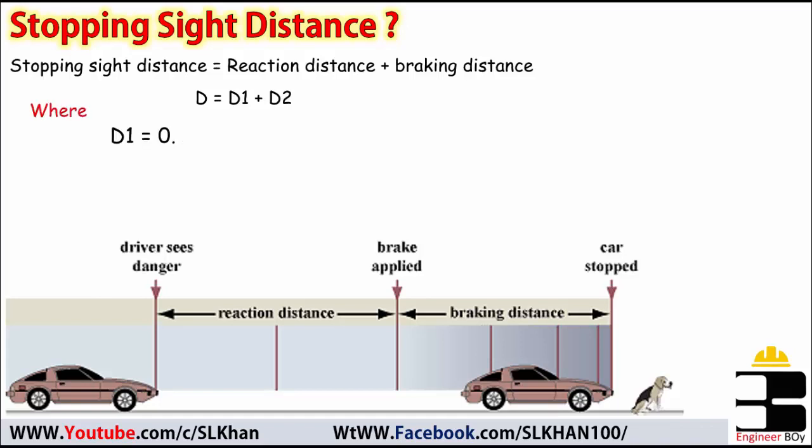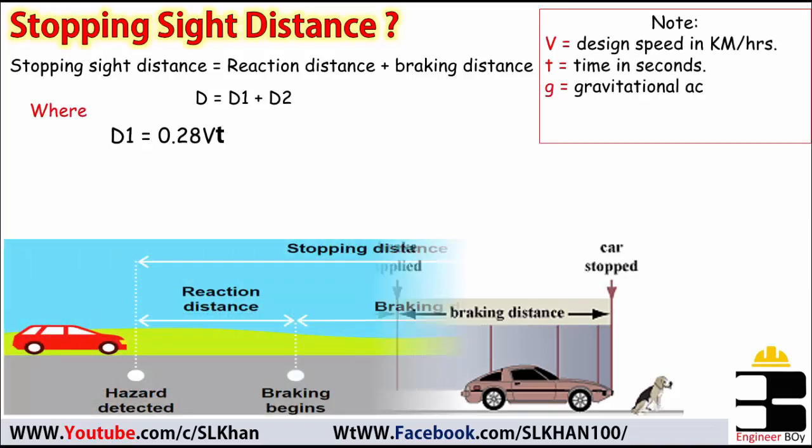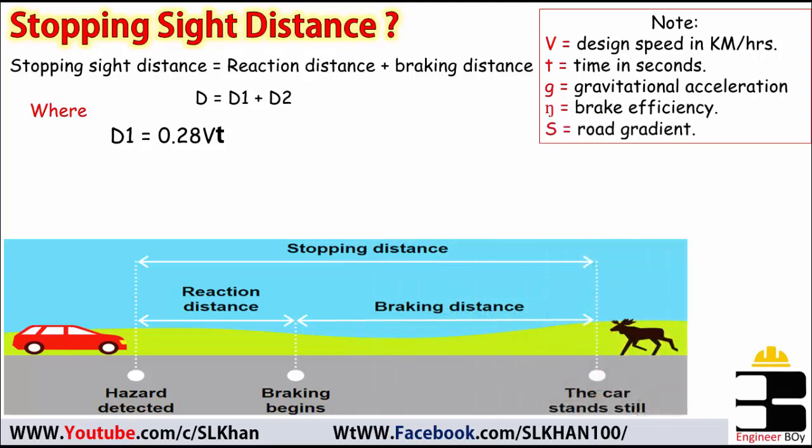Remember D1 and D2 can be calculated by using the following formulas. D1 equals 0.28Vt where V is the velocity or speed of the vehicle and t is the time in seconds which can be actually two seconds or maybe three seconds. Also D2 must be 0.01V squared.